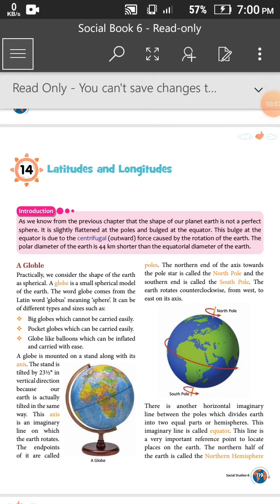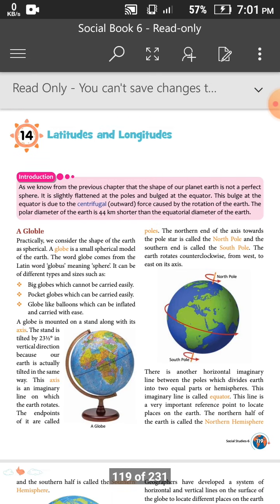Good morning students, in this video we are continuing our second chapter of geography of class 6, latitude and longitude. First we see the short introduction. As we know from the previous chapter that the shape of our planet earth is not a perfect sphere, it is slightly flattened at the poles and bulged at the equator. This bulge at the equator is due to the centrifugal outward force caused by the rotation of the earth. The polar diameter of the earth is 44 km shorter than the equatorial diameter of the earth.